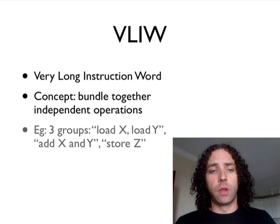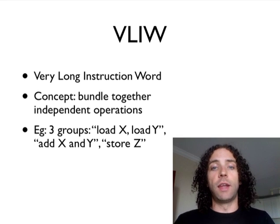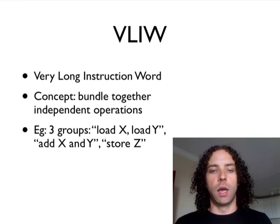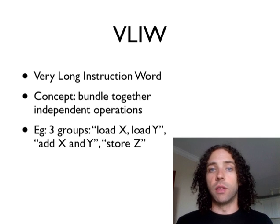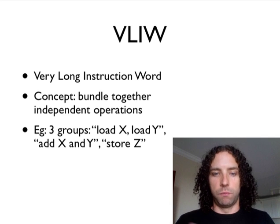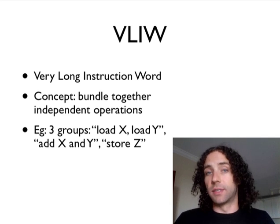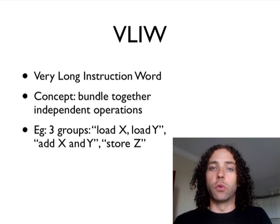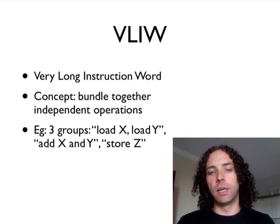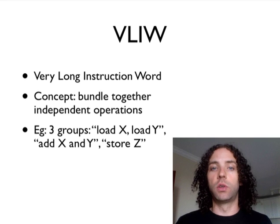It also means the chips use less power. The example from before — we can take those four RISC instructions and group them into VLIW bundles. We have three groups: load X and load Y can be executed at the same time because they're unrelated. Then add X and Y has to be its own group because it depends on the loads finishing. And then store Z is its own group as well, because it has to rely on the add having completed. This exposes instruction-level parallelism to the compiler so it can come up with more optimized sequences that actually execute faster.